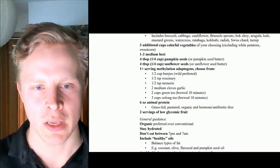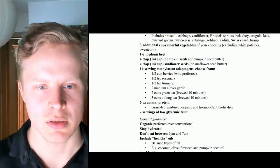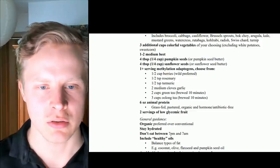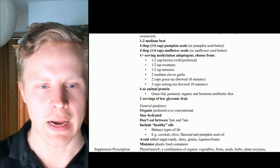1 plus serving of methylation adaptogens to choose from: a half cup of berries, a half teaspoon of rosemary, a half teaspoon of turmeric, 2 medium cloves of garlic, 2 cups of green tea, 2 cups of oolong tea. So you would have to choose one from that. Rosemary has a ton of antioxidants, turmeric as well, berries, green tea for the EGCG, and garlic also for the sulfur and helps with glutathione.